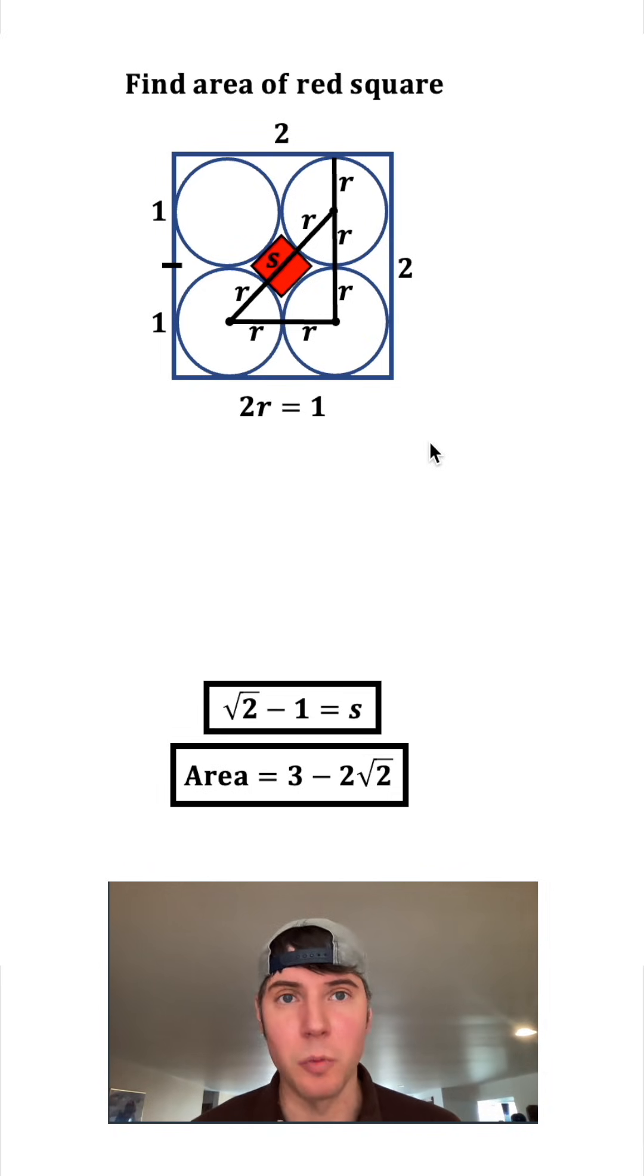Now let's use Pythagorean theorem for this right triangle. We have a² + b² = c², where a is this bottom side here, which is r plus r, but we know that r plus r is equal to one. b is this r plus r, but we know that's equal to one, well c is this r plus s plus r.